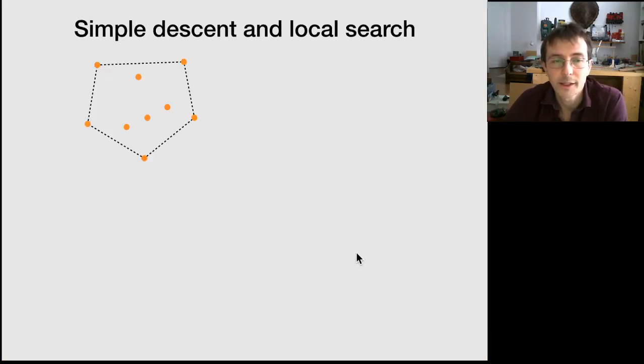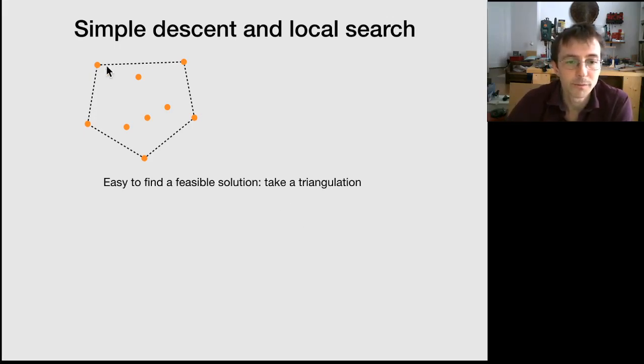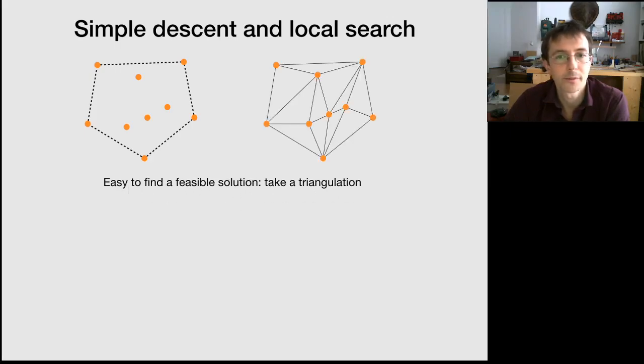And to get a better understanding of it, we start by explaining a very simple algorithm to produce feasible solutions. And when you have a dataset, an easy way to produce a feasible solution is to take a triangulation like this one.